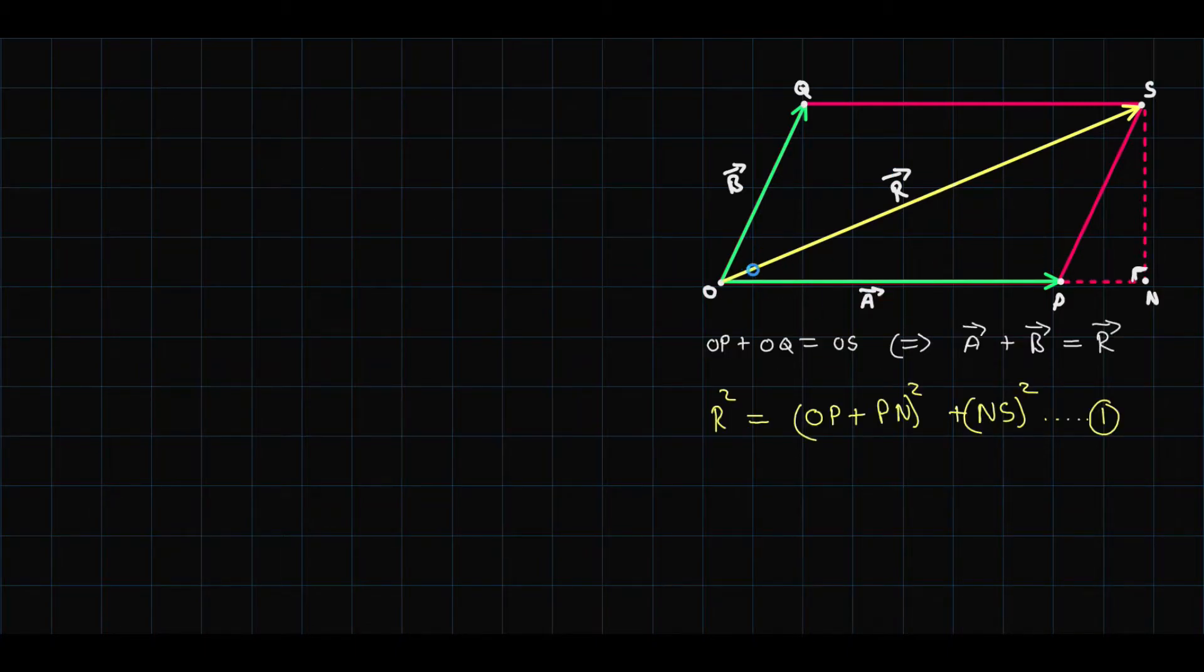Now let's be more specific with the angles. Let's name the angle between the two vectors be theta. Because this angle is theta, the angle between PS and PN also will be theta. Now why is that? It's because the lines OQ and PS are parallel to each other. Moving on to this triangle over here.